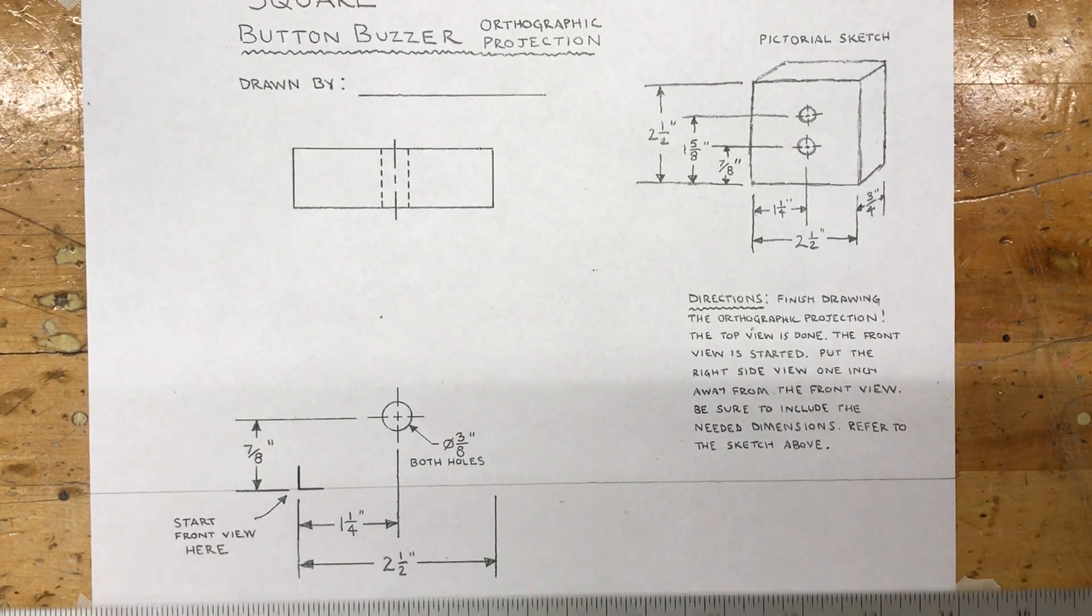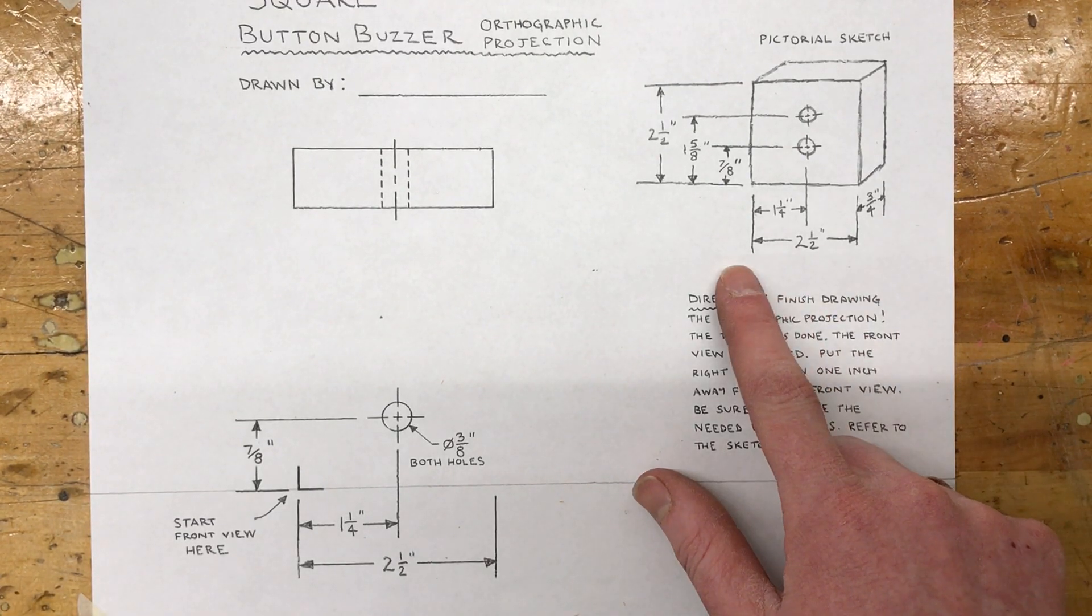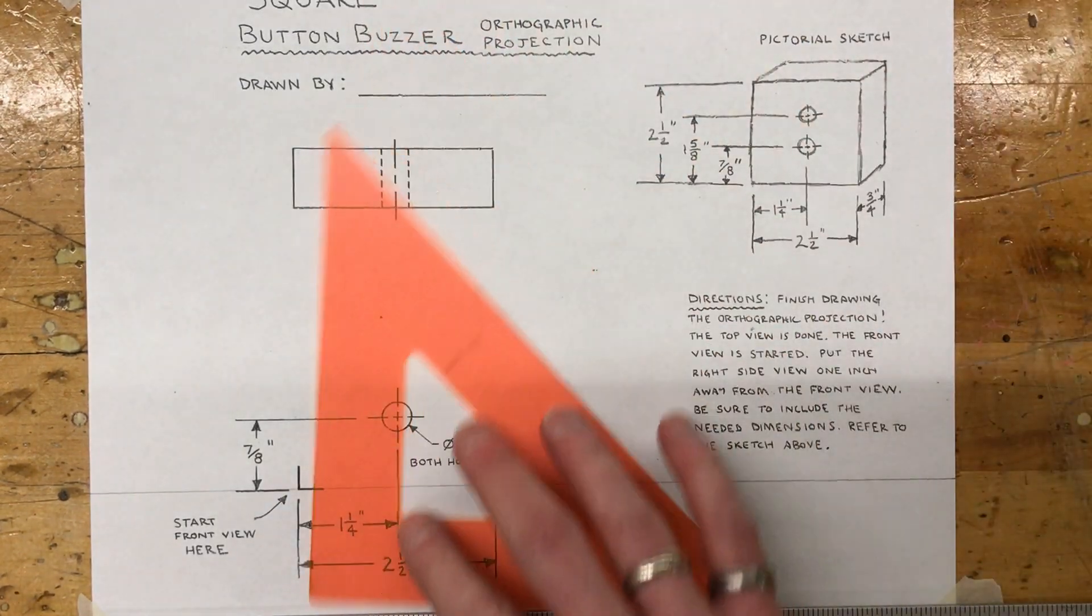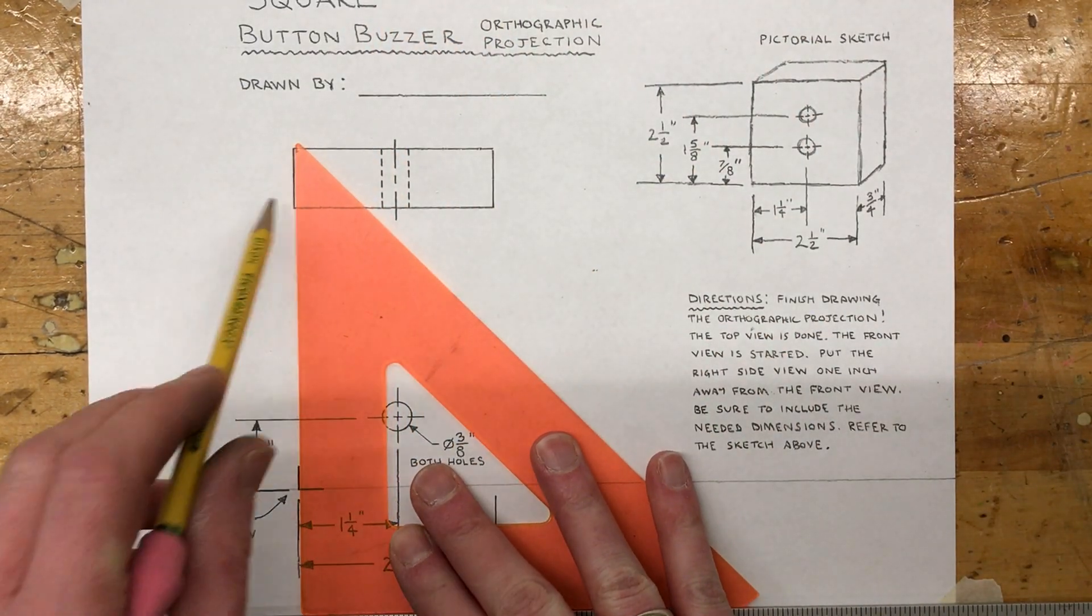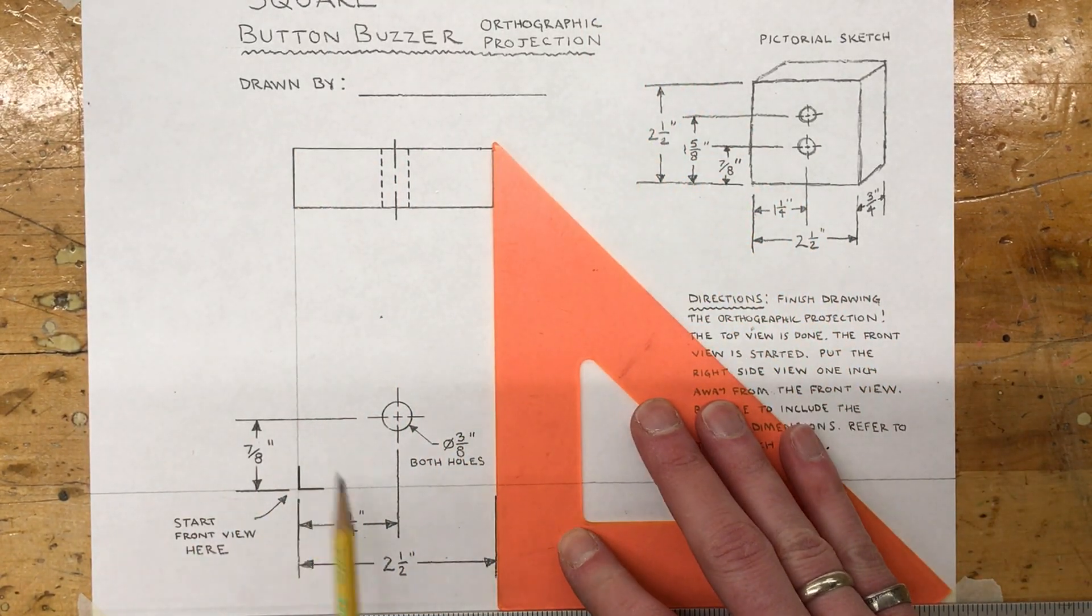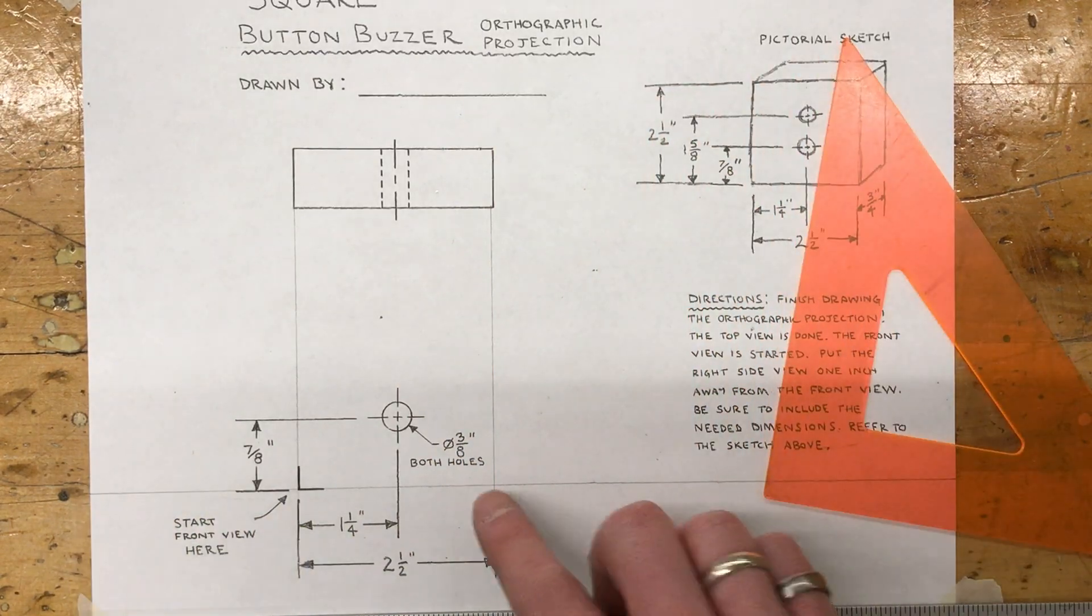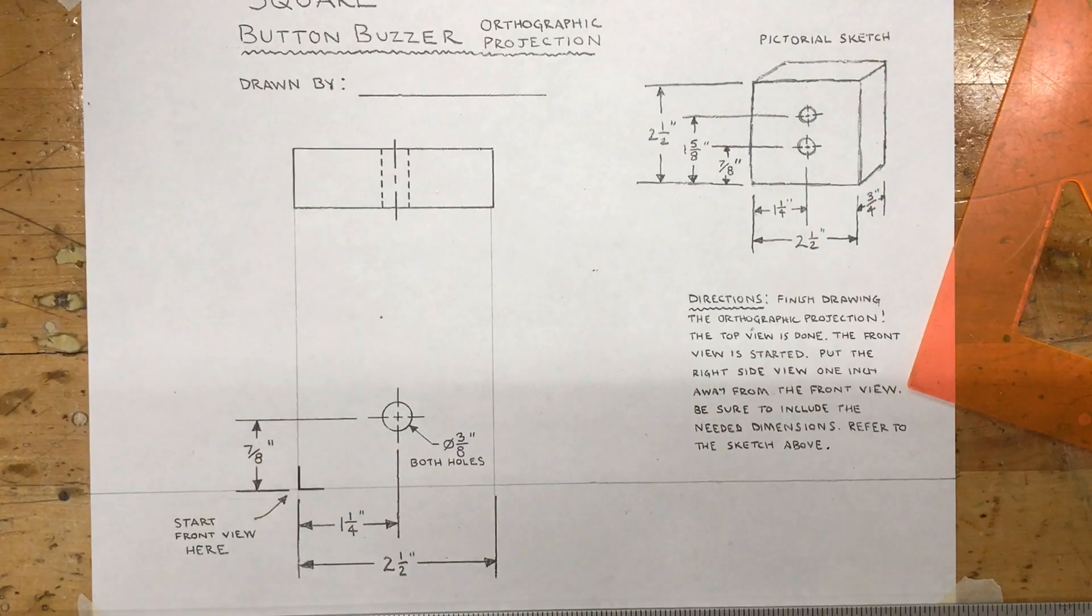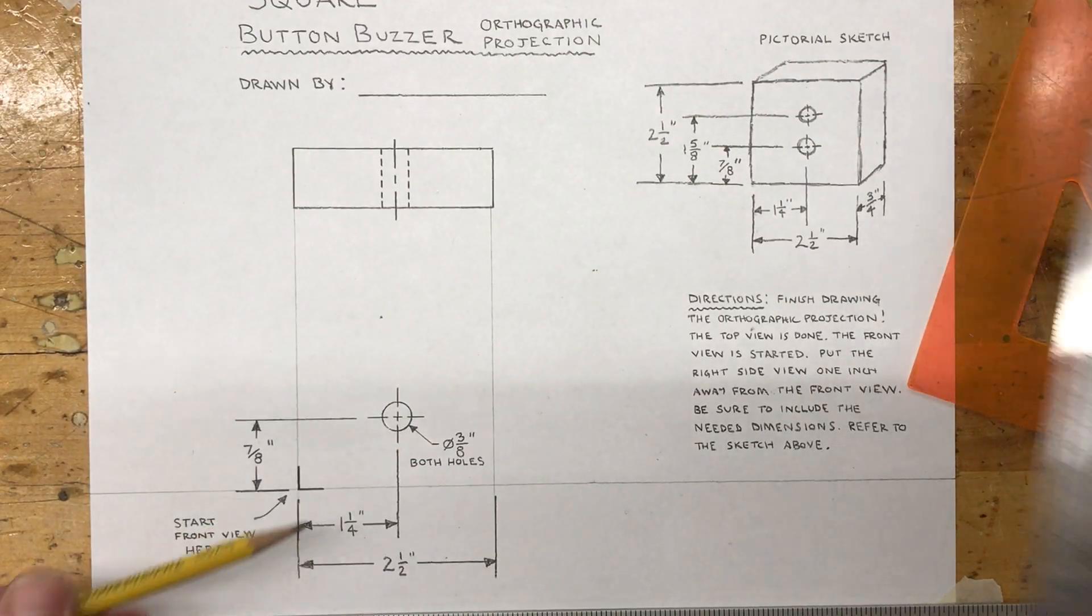The drawing is two and a half inches wide. Again here's my starting point - I'll make a light line all the way up from that point. Right there's two and a half inches. The height is two and a half inches, so from the bottom here I just measure up two and a half inches, put a mark.